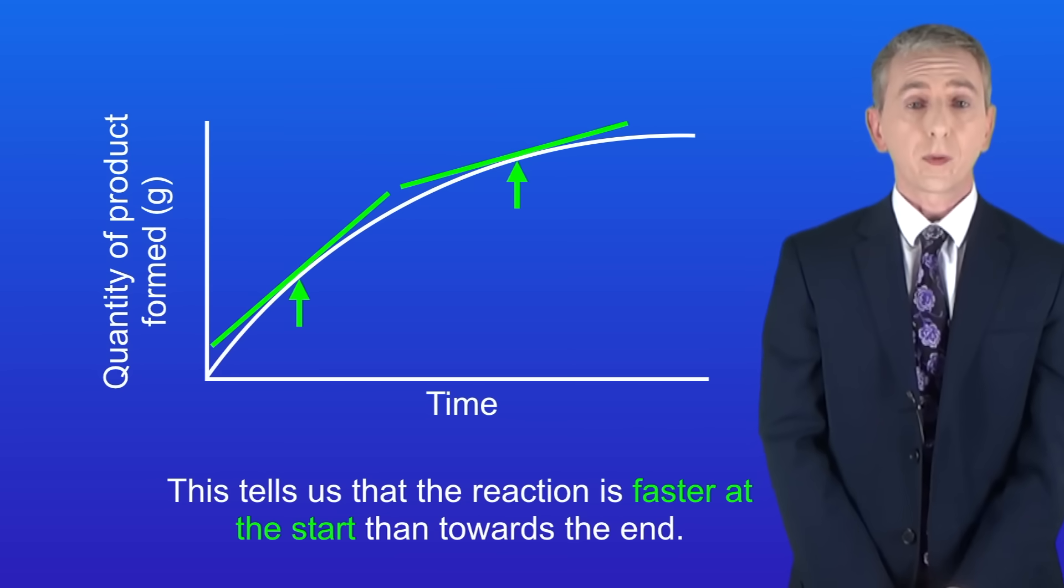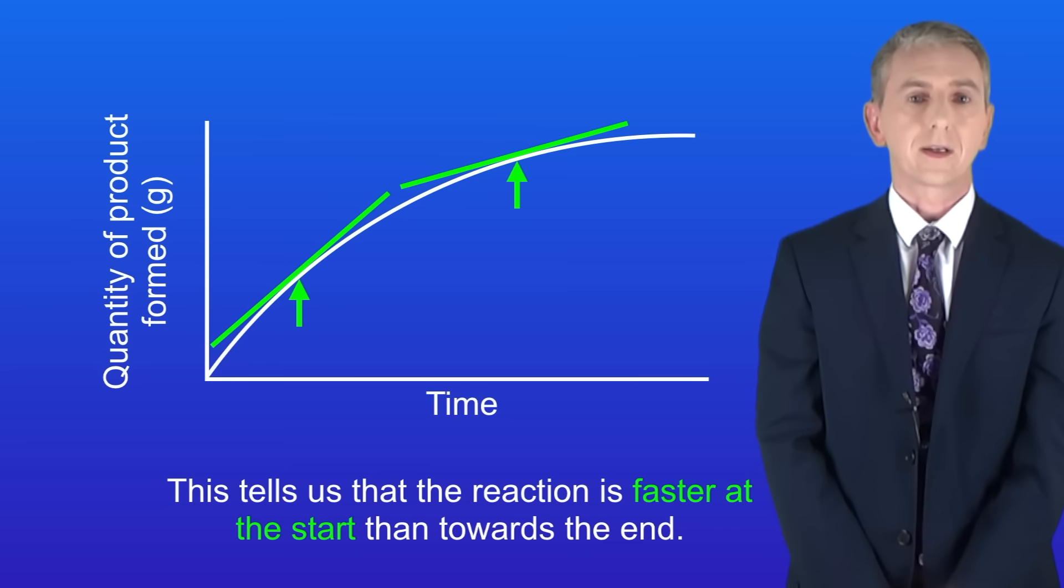As we saw, the slope of a tangent gives us an idea of the rate of a reaction at a given point. However we can use the tangent to calculate the rate of reaction.